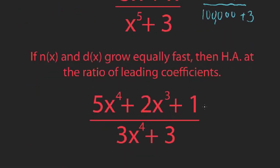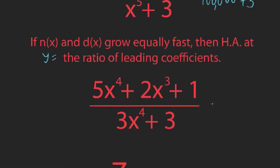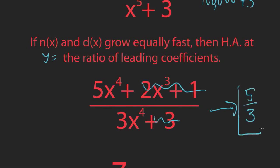If n(x) and d(x) grow equally fast, the horizontal asymptote is at y equals the ratio of leading coefficients. As x gets bigger and bigger, the smaller powers of x are totally eclipsed by the higher powers. So this function looks more and more like 5x to the fourth divided by 3x to the fourth, and the x to the fourths cancel, so it just approaches five-thirds. This idea of a function approaching a certain value is something you'll explore more in calculus.